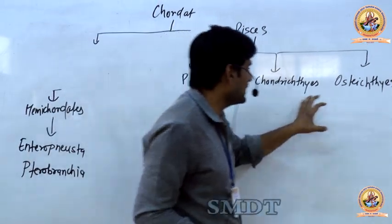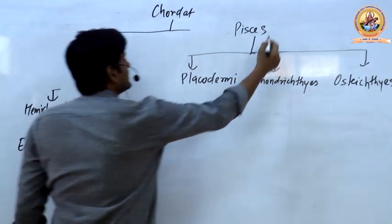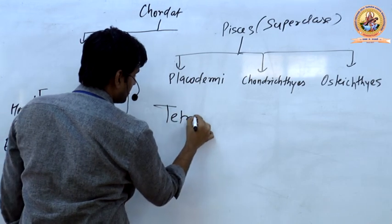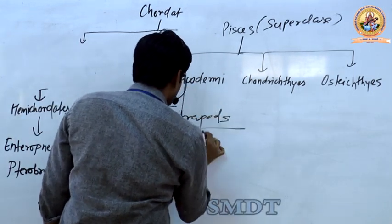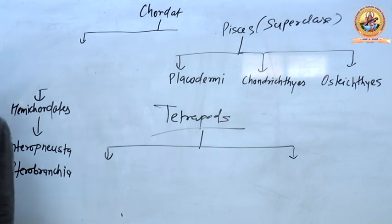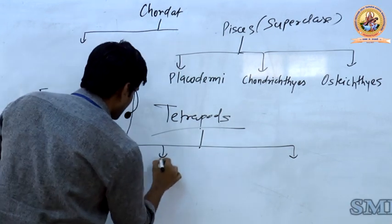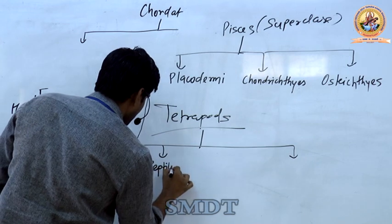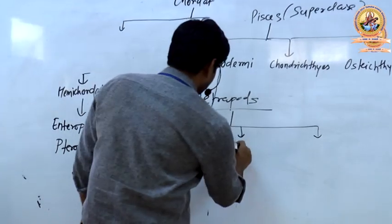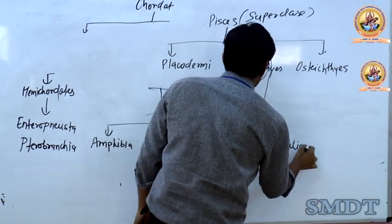Pisces is divided into three classes: Placodermy, Chondrichthyes, and Osteichthyes. Pisces is a superclass. Next, in Tetrapoda, the classes are: Amphibia, Reptilia, Aves, and Mammalia — or Mammals, you can call them both. These are the classes within the superclass Tetrapoda.